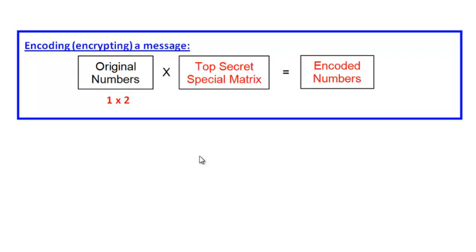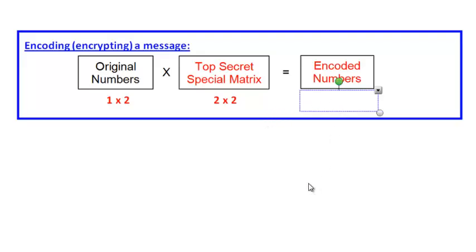The dimensions of the first matrix are always 1×2 — one row and two columns, so two numbers at a time. The top-secret matrix is always 2×2. When you multiply a 1×2 by a 2×2, the result is a 1×2. So you start with two numbers and end up with two new numbers.